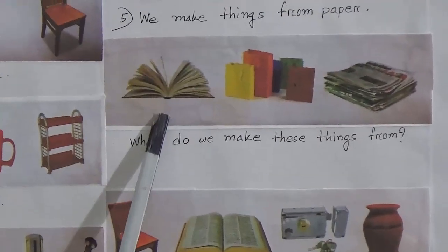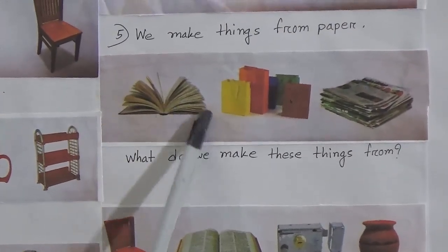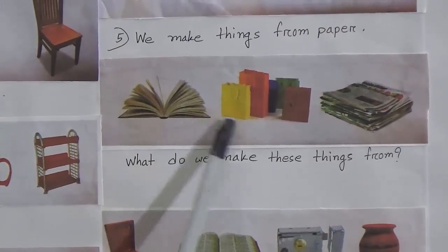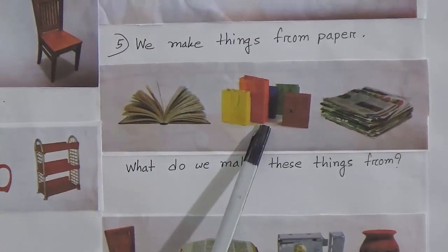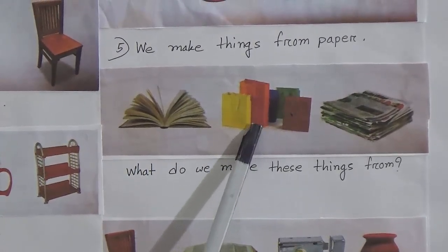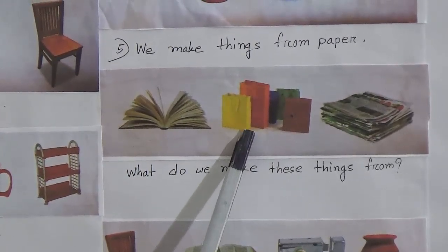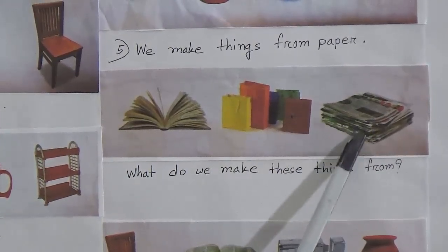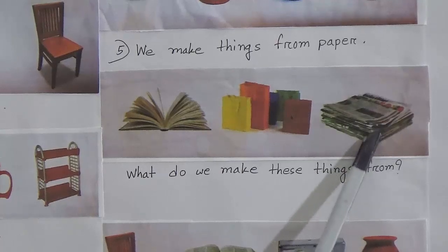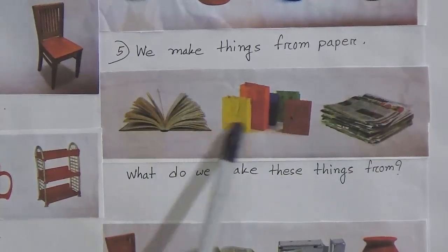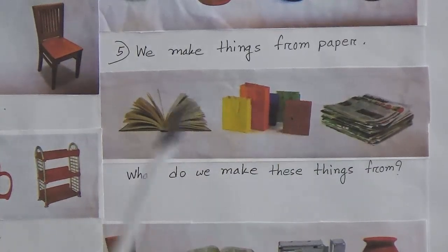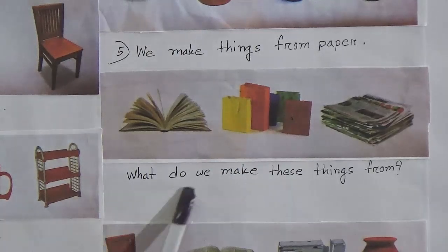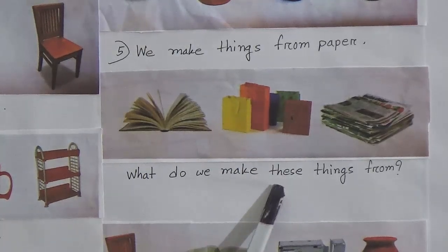Point number five: we make things from paper. Here is a book — this is made from paper. Here is a shopping bag — I have shown you a shopping bag like this. And here is a newspaper. These all are made from paper.